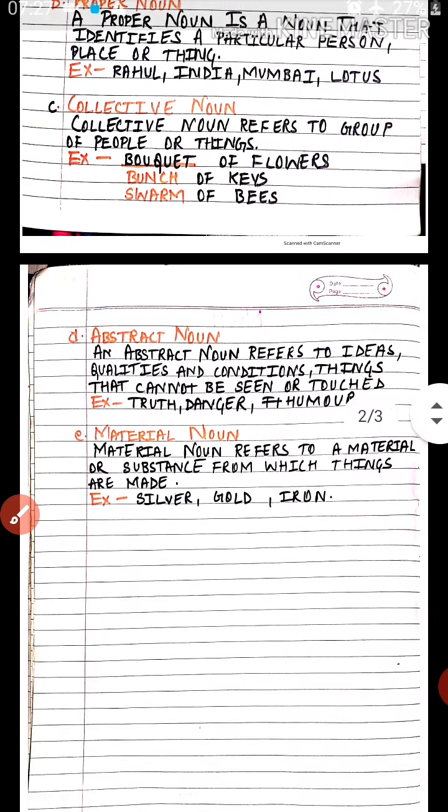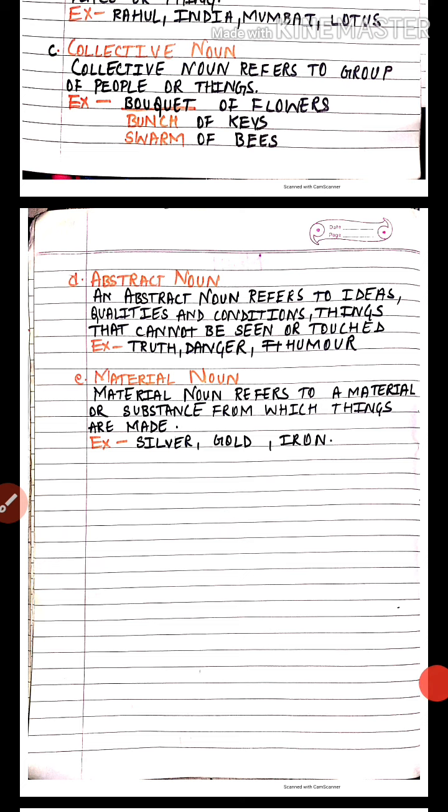Now next is abstract noun. An abstract noun refers to ideas, qualities, and conditions — things that cannot be seen or touched. Abstract noun refers to feelings or emotions. For example, 'happiness' is a feeling, 'honesty' is a feeling, 'music' is something we cannot see or touch but can only feel, and 'jealousy' is also something we can only feel but not see or touch.